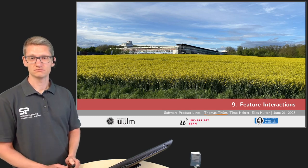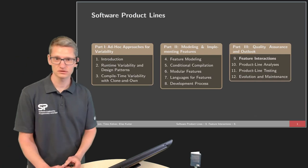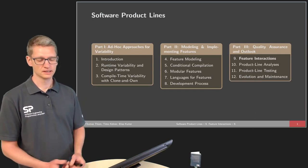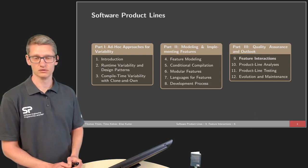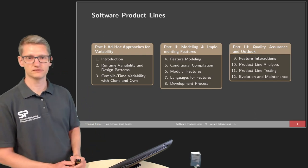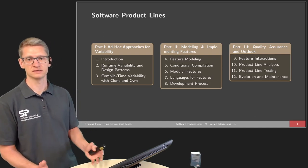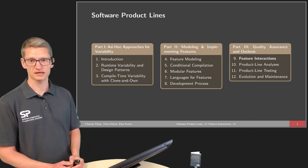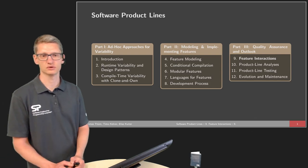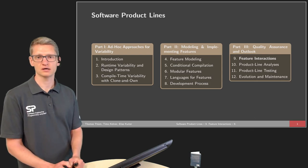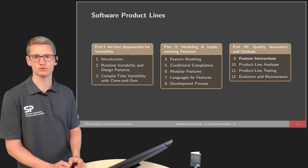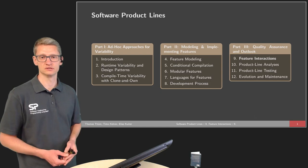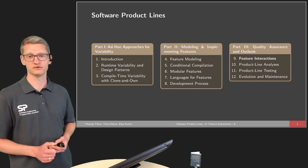We've been talking about other topics during this lecture series already. We talked about ad hoc approaches for variability, such as runtime variability or clone and own. We also talked about modeling and implementing features — modeling features in terms of a feature model, implementation techniques, and the development process in product lines. What we haven't discussed so far are topics like quality assurance, and we will discuss those in the third part of the lecture series in more detail. This is the first lecture in that third part, and we will talk about feature interactions today.